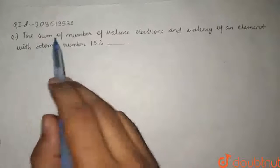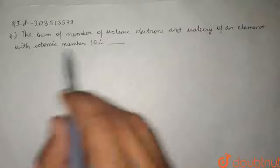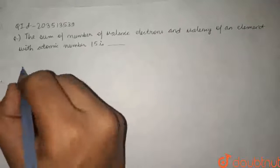Hello friends, here is the question. The sum of number of valence electrons and valency of an element with atomic number 15 is? Let's start solving this question.